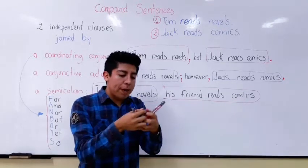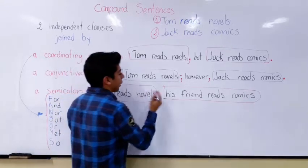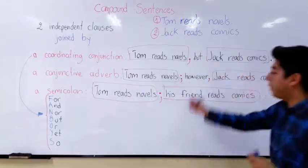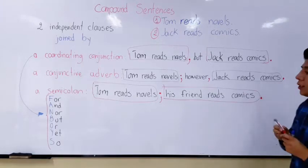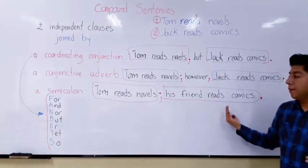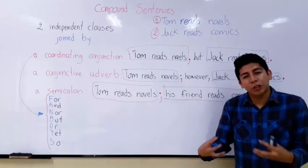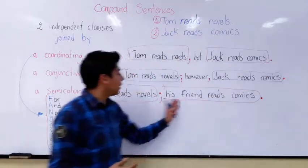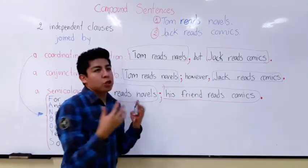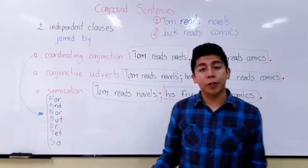The meaning of both clauses has to be strongly related. So: 'Tom reads novels' semicolon 'his friend reads comics,' finished with a period. As you can see, after reading this sentence you understand that these two independent clauses are related. That is the rule for using a semicolon — you must have two strongly or directly related independent clauses.